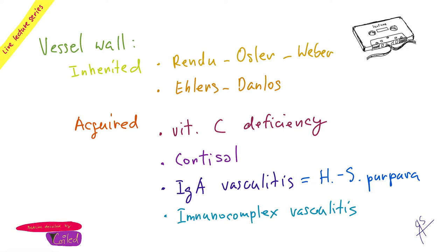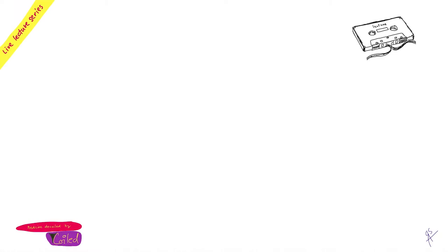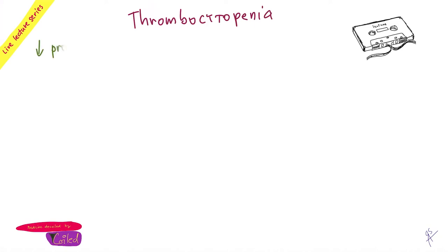Then we talked about thrombocytopenia — we're still in the primary hemostasis disorders. What can cause thrombocytopenia? Don't forget, especially in the Czech Republic — alcohol. Alcohol can cause thrombocytopenia. Don't forget alcohol.